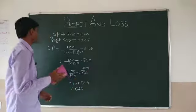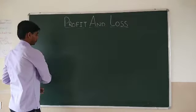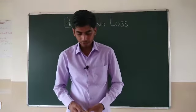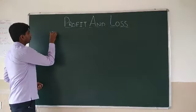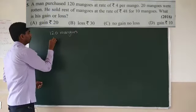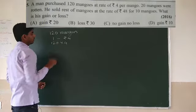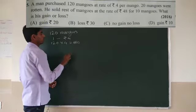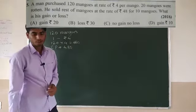Next question: a man purchased 120 mangoes at Rs 4 per mango. He purchased 1 mango for Rs 4 and total mangoes are 120. Multiply 120 by 4: cost price is Rs 480.